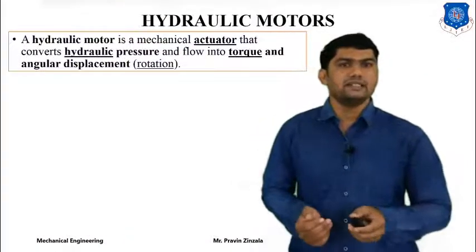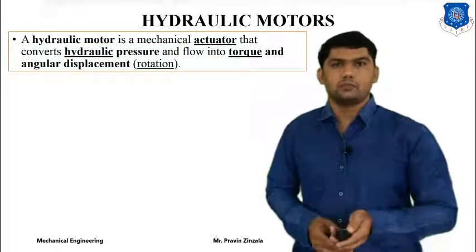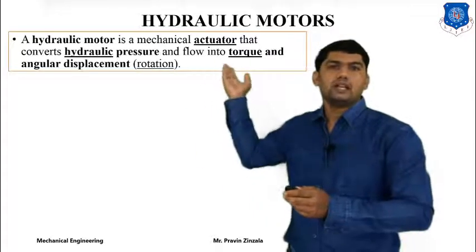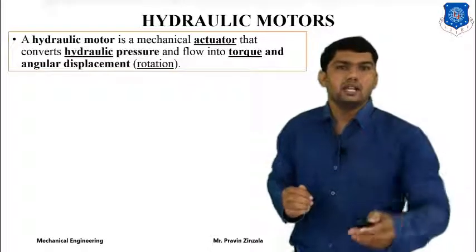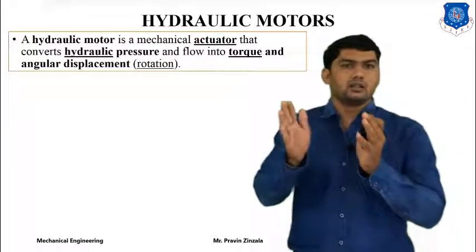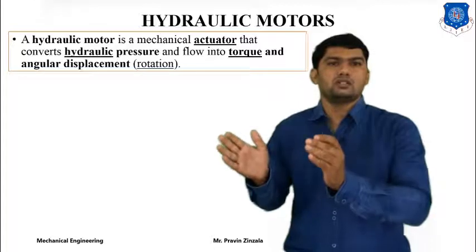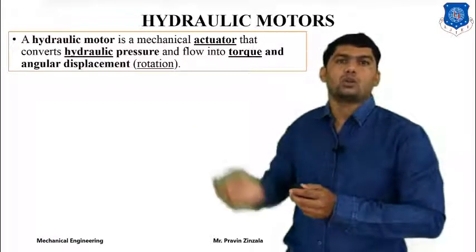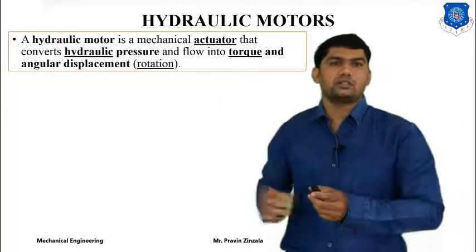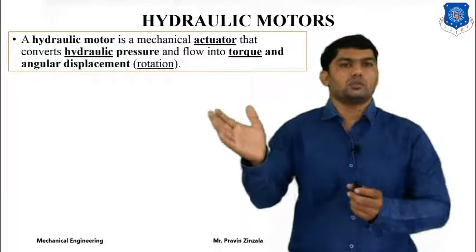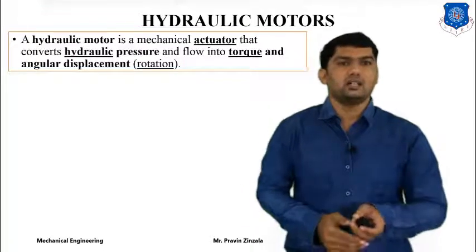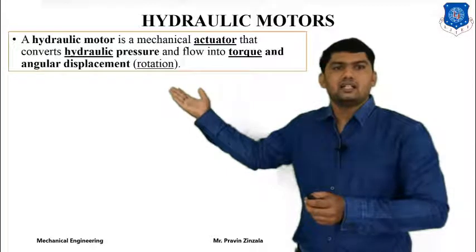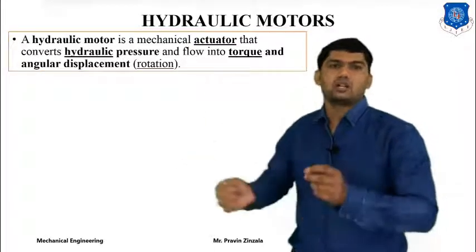Now we will discuss the hydraulic motor. A hydraulic motor is mainly used for conversion of hydraulic energy into rotary motion. The main function of a pump is to convert mechanical energy into hydraulic energy, while the hydraulic motor converts hydraulic energy into rotary motion. We can also say it converts hydraulic pressure or flow into torque or angular displacement — rotational motion. So a hydraulic motor converts pressurized hydraulic energy into rotary motion, similar to how an electrical motor converts electrical energy into rotary motion.